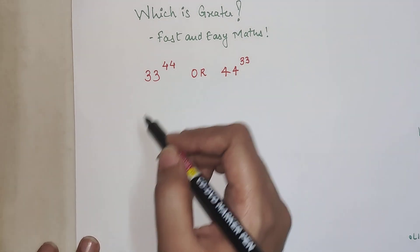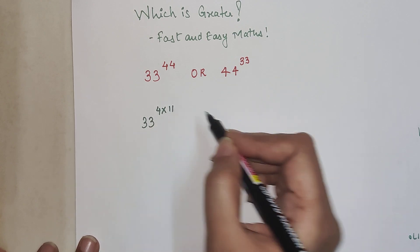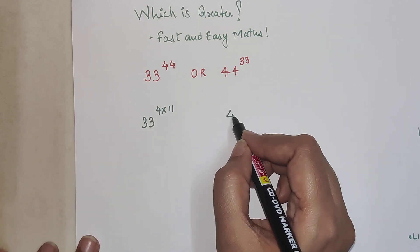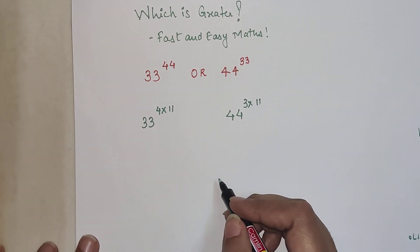Students, I can write 44 as 4 times 11. Similarly, I can write 44 raised to 33 as 44 raised to 3 times 11. And 33 is 3 times 11.